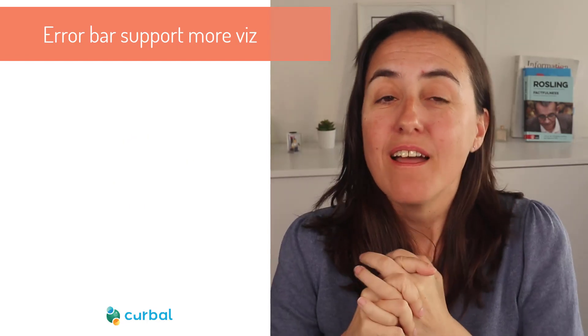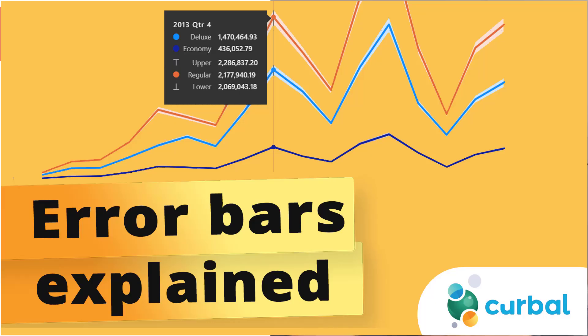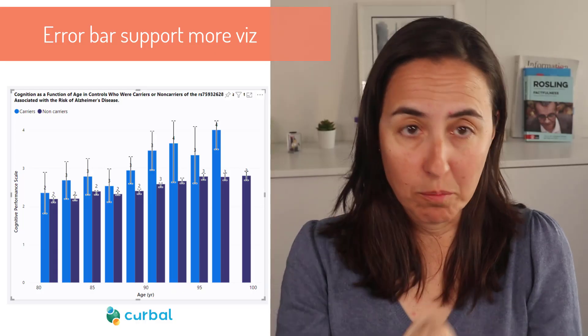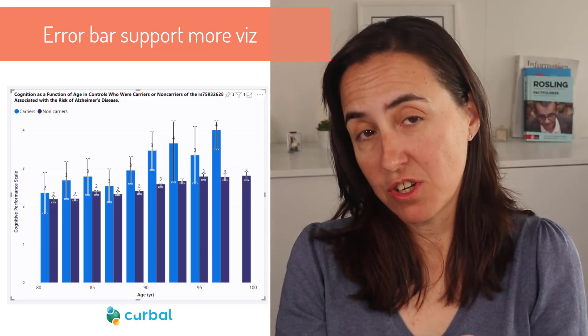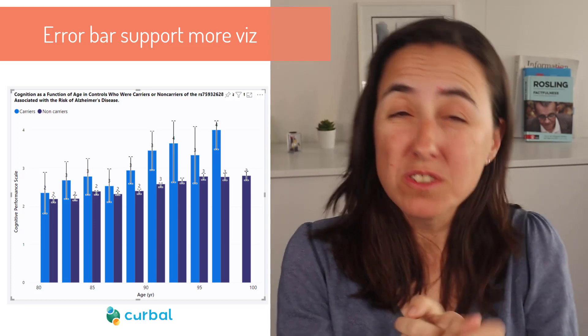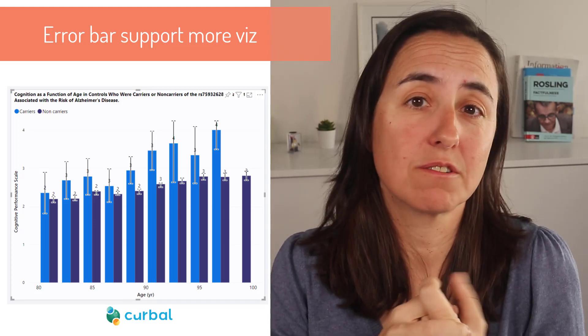Error bars, if you remember from last month, were added for line charts. Now they are also available for bar and column charts, which are probably the most common use case for this type of error bar — so this is great.